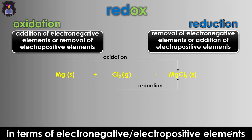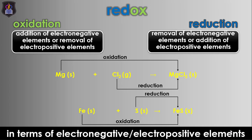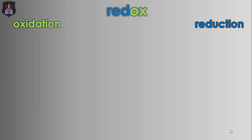Similarly, in the reaction between iron filings and sulfur powder to form iron sulfide, the iron undergoes oxidation to form iron sulfide because an electronegative element is added to it, while the sulfur undergoes reduction to form the same iron sulfide because an electropositive element is added to it.